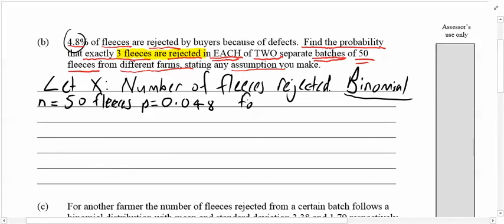Okay, so that's our parameters. And this is for one batch of 50. So in one batch of 50, the probability that exactly three are rejected, so x equals three, is going to be the binomial probability using n equals 50 and p equals 0.048. So calculator out.